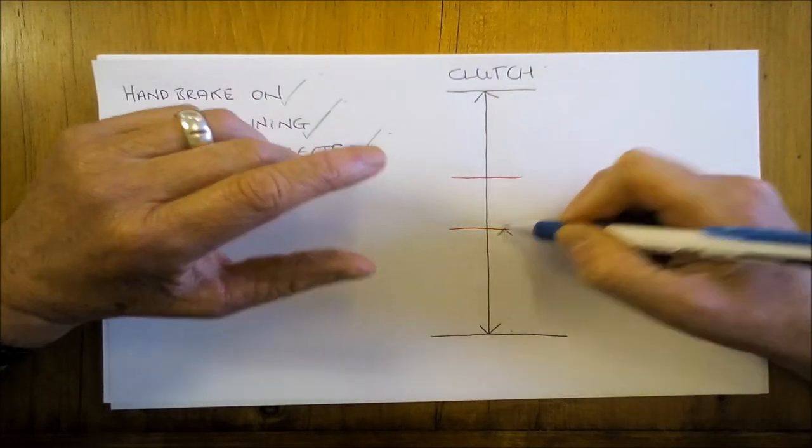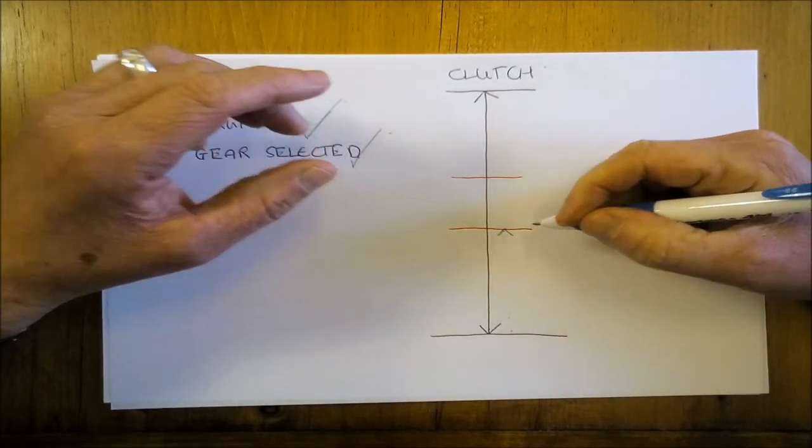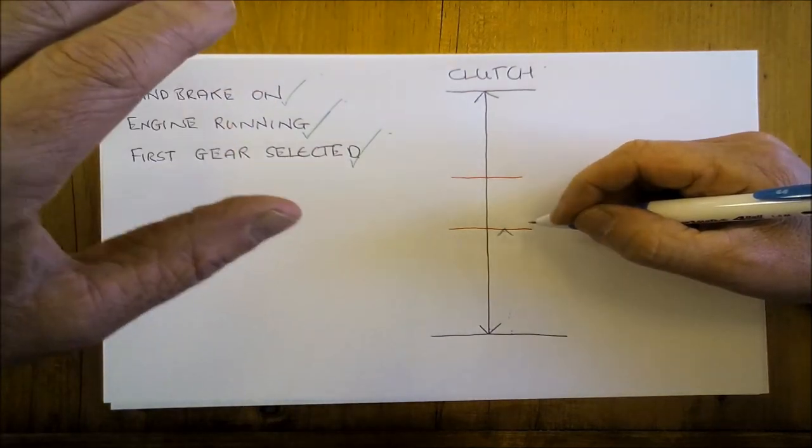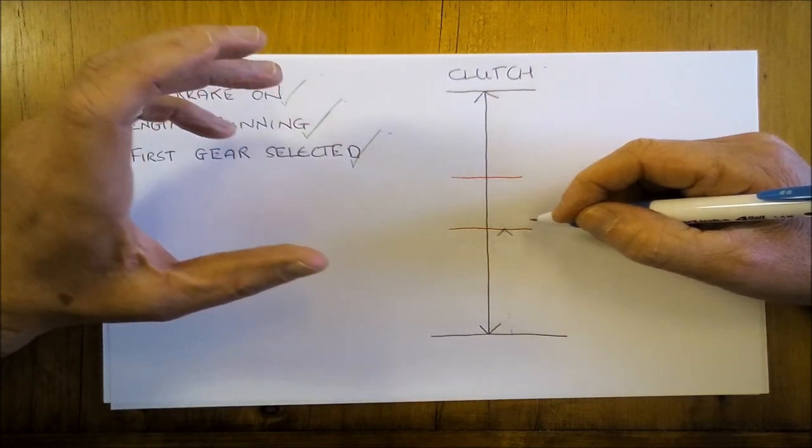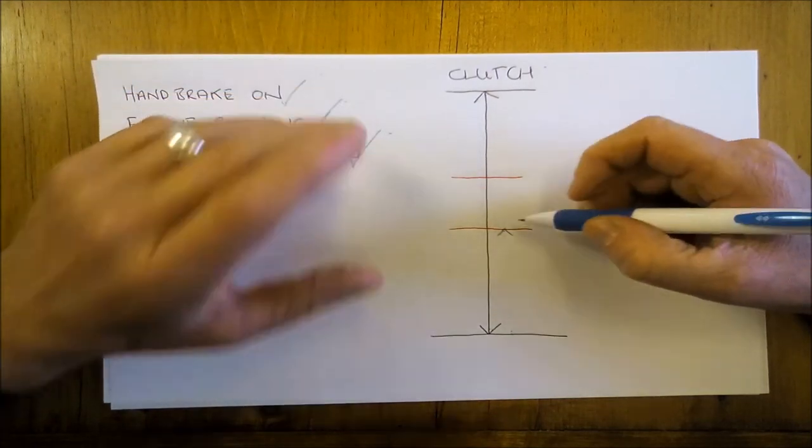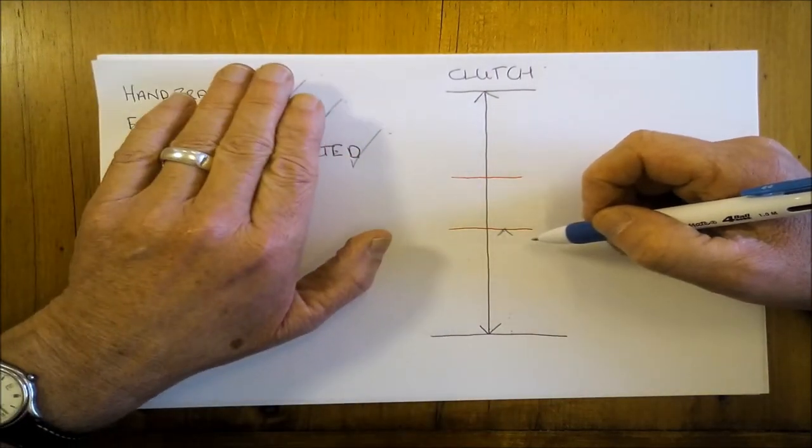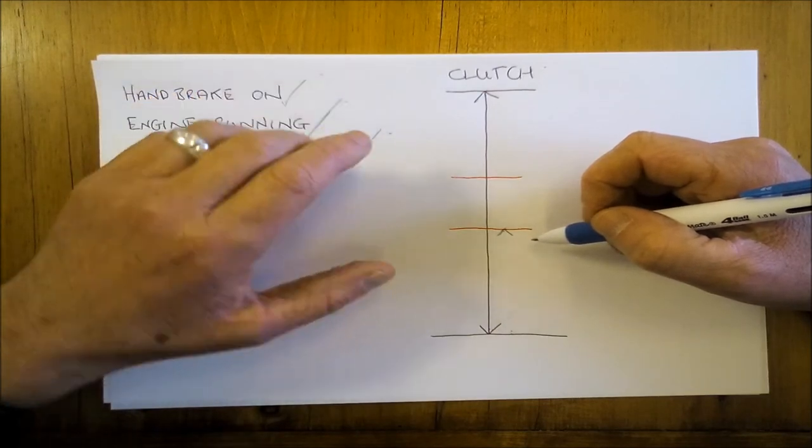Now when you get to the bottom of the biting point, certain things will happen. There'll be a slight change in the tone of the engine, there'll be a little bit more vibration if you like, and the front of the car will possibly just lift a little bit.